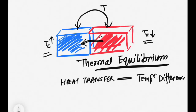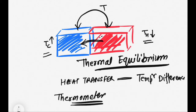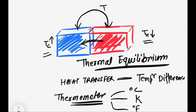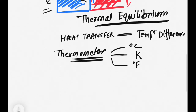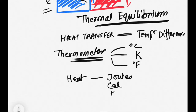The temperature of any object is measured using a thermometer. The units of temperature are degree centigrade, or in SI units, Kelvin, and in the FPS system, degree Fahrenheit. On the other hand, heat is a form of energy in transfer from one object to another. The unit of measure of heat is the unit of energy, which is joules, or calorie, or kilocalorie.